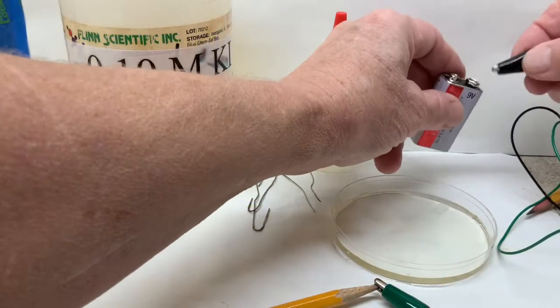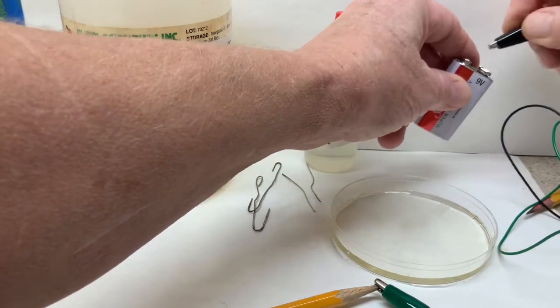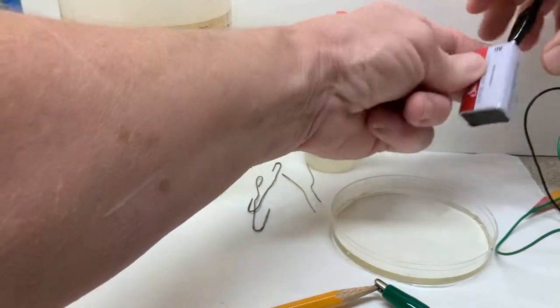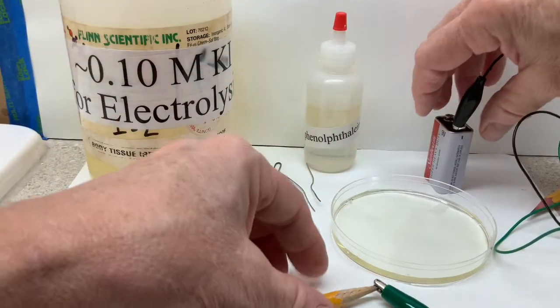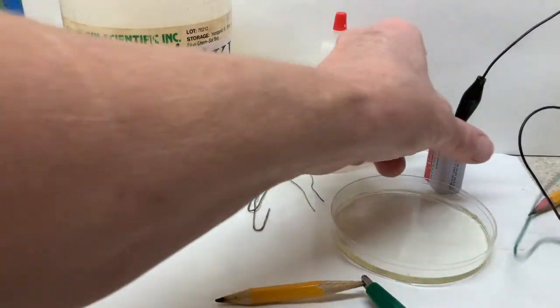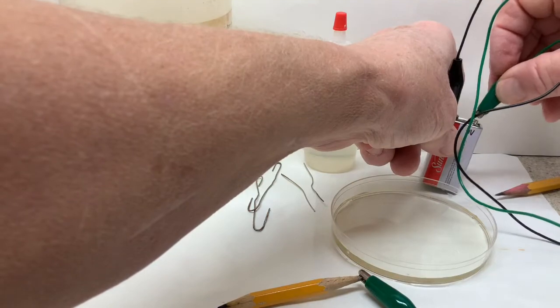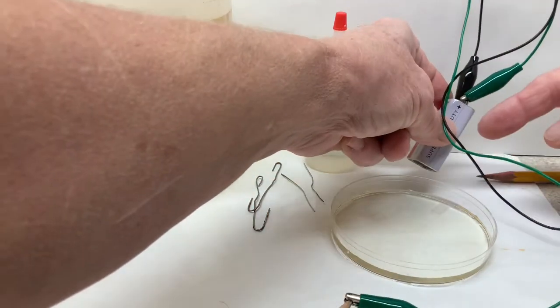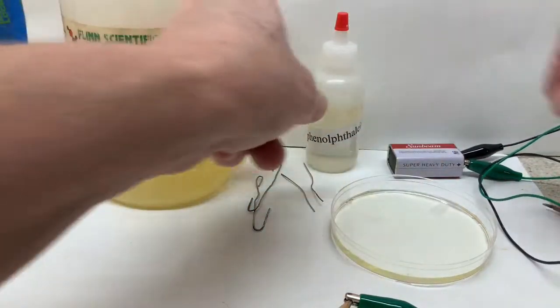The marking that is negative is the end of the battery in which electrons come spewing out. Throughout this video that will be the black alligator wire, and the green wire will be connected to the positive end of the battery.